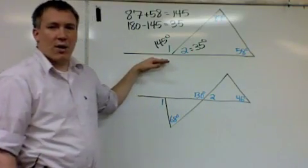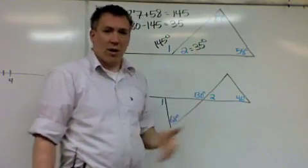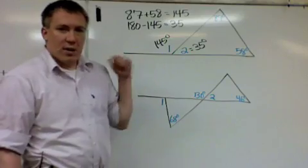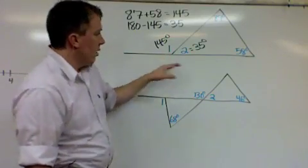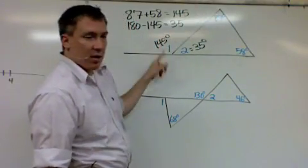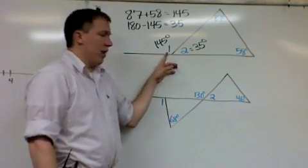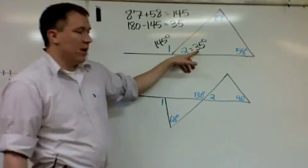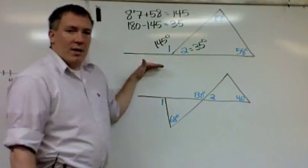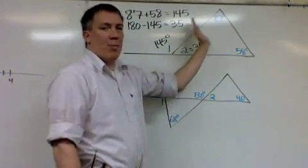There are three exterior angles on a triangle. There are three vertices, which is plural for vertex, where it comes to a point. One vertex, two vertices, three vertices. This is called the exterior angle. It's outside the triangle. This would be the interior. The exterior angle is equal to the sum of the two opposite interior.